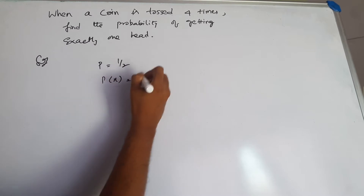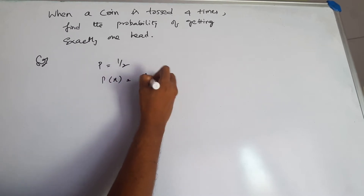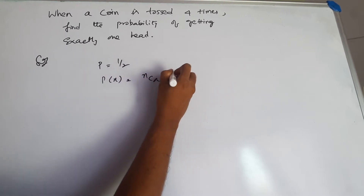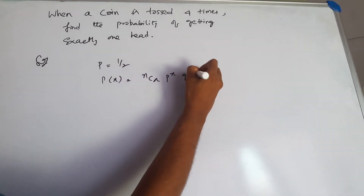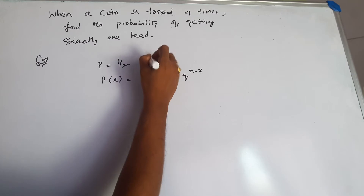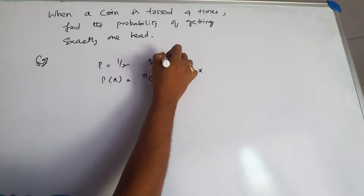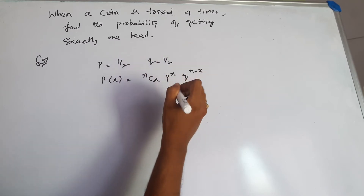P of x is nCx, p power x, q power n minus x, with q being half.